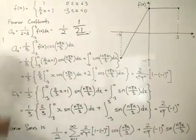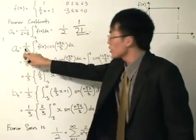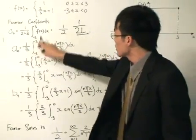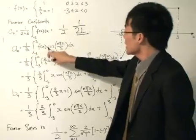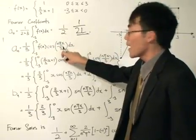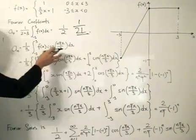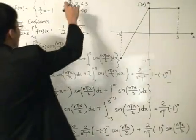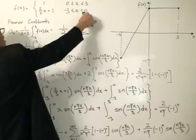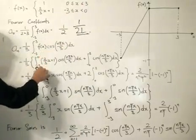When we move to An, it's 1 divided by L, so that's why I just got a 3 over here. We integrate from minus 3 to 3 of the function f(x) multiplied by cosine of nπx divided by L, where L equals 3. We need to split up f(x) into the intervals minus 3 to 0 and 0 to 3.